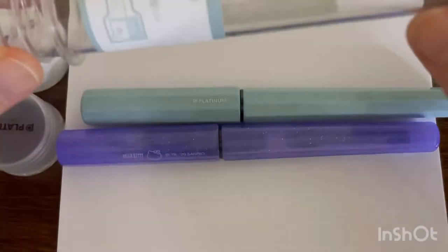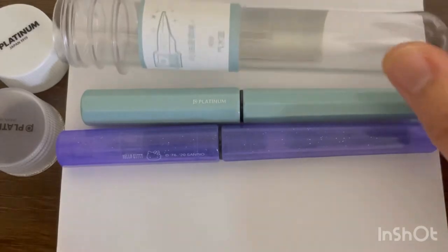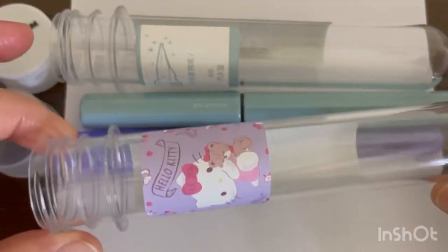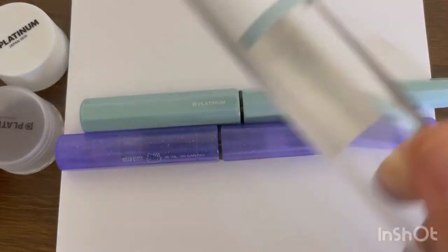First of all, let's take a look at the packaging. The packaging is really cute - it comes in what looks like a test tube plastic bottle. The material of the pen itself is made of plastic, so they are really lightweight pens.